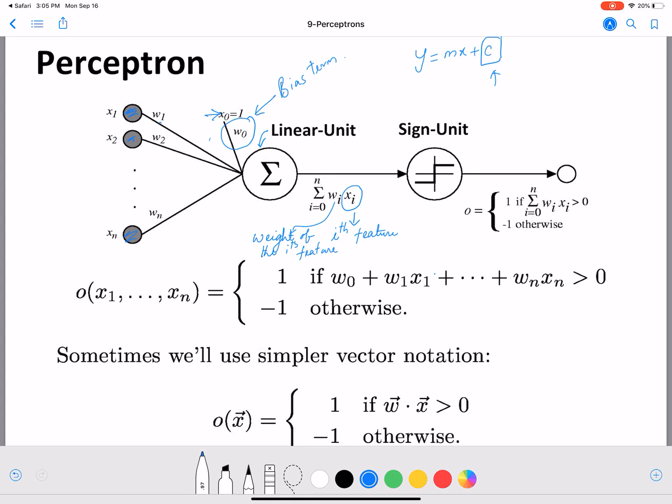After you compute this wi xi, then you pass that on to a sign unit. A sign unit then determines if this sum that you just calculated is greater than 0. If it is greater than 0, then your output is 1, otherwise minus 1.